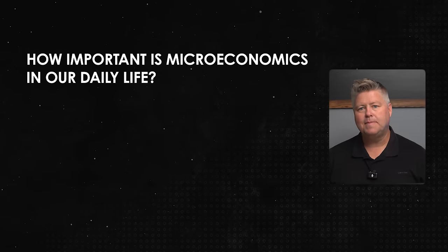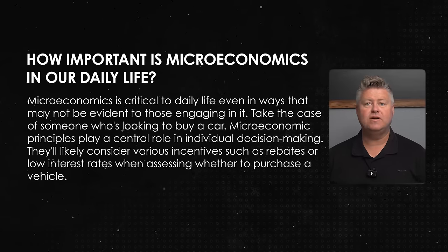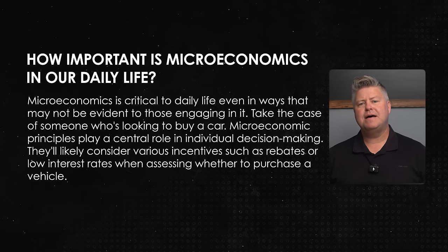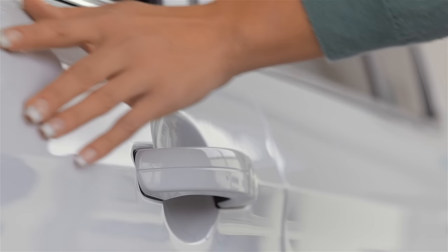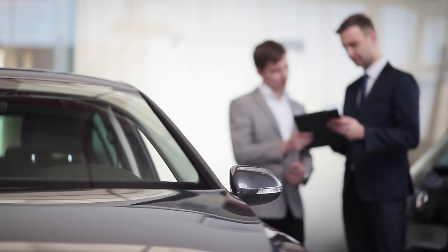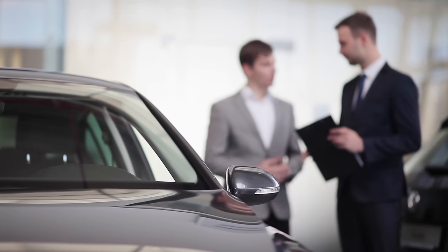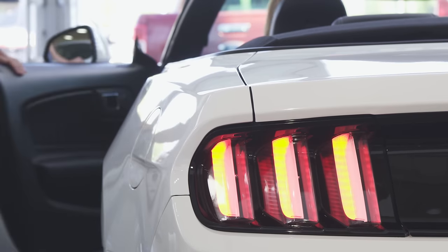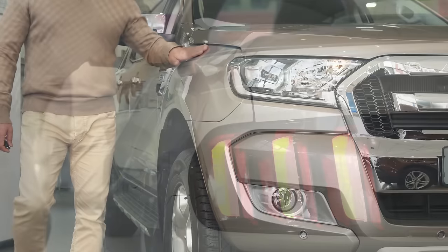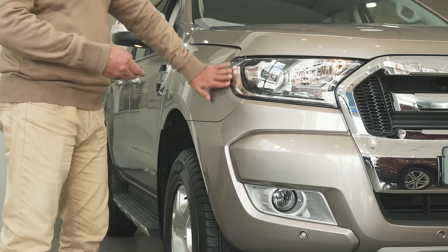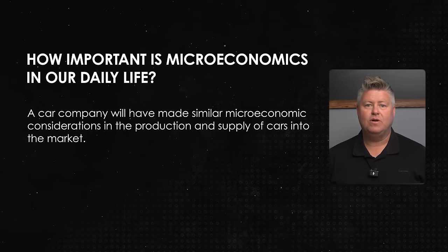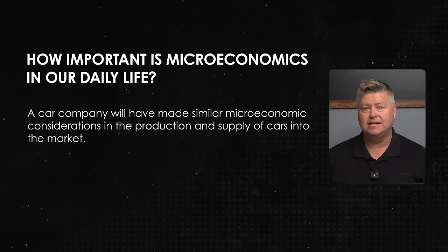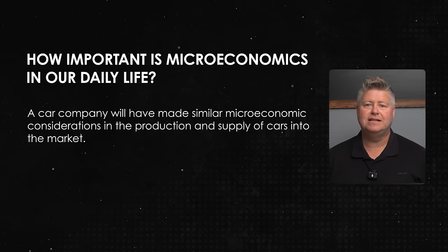So how important is this in our everyday life? Microeconomics is critical to daily life, even in ways that may not be evident. Take the case of someone looking to buy a car. Microeconomic principles play a central role in individual decision making. They'll likely consider various incentives such as rebates or low interest rates when assessing whether to purchase a vehicle, and select a make or model based on maximizing utility while staying within their income constraints. A car company will have made similar microeconomic considerations in the production and supply of cars into the market.